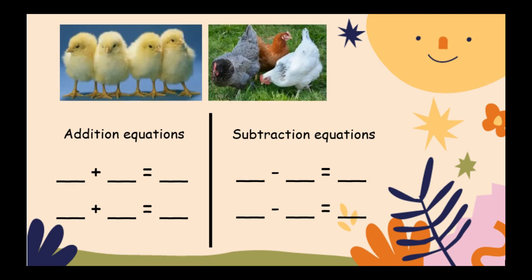We have four chicks plus three hens equals seven chickens in all. Or three plus four equals seven. For subtraction equations, we have seven minus four equals three, or seven minus three equals four.